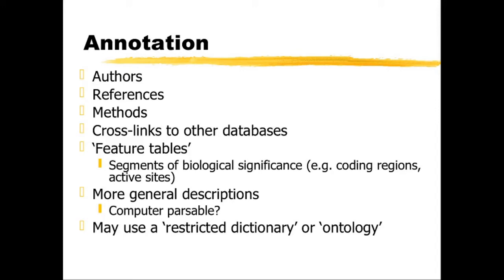To give an example of an ontology, we could apply that to names of animals. We could say that a mammal inherits all the characteristics of an animal but also has the specific characteristic of producing milk. Similarly, a lion inherits all the characteristics of a mammal, and therefore all the characteristics of an animal, and so on.